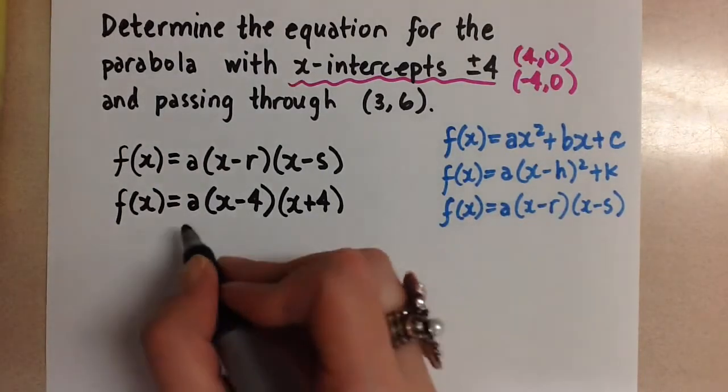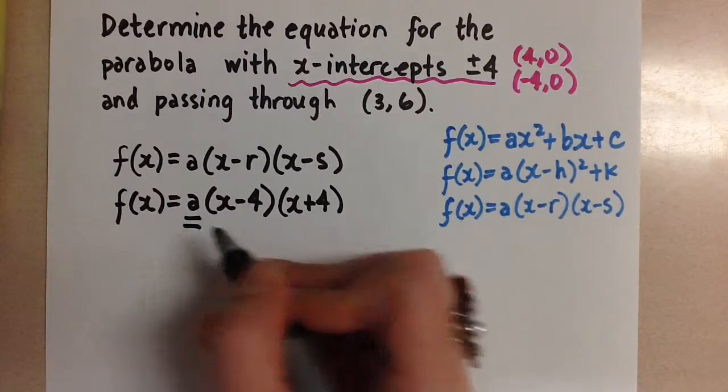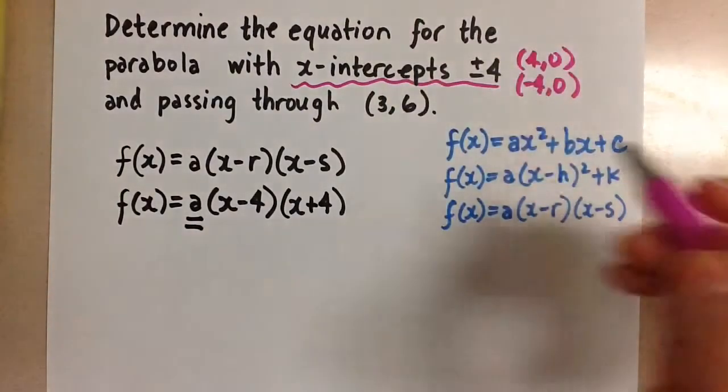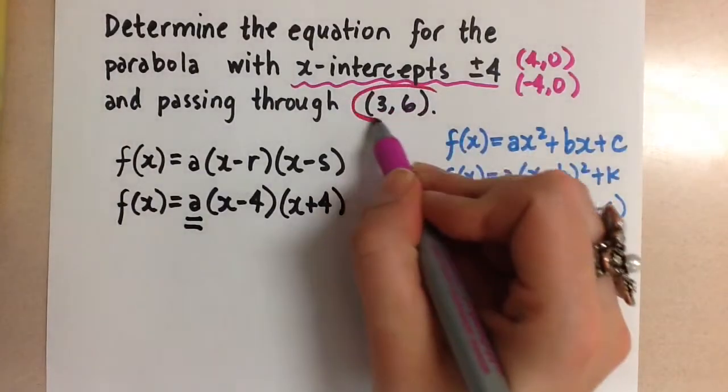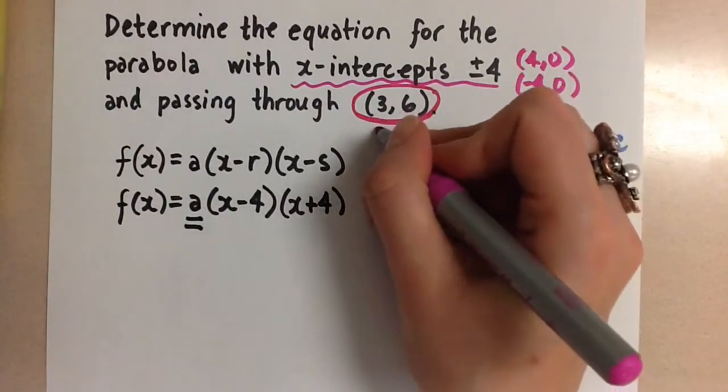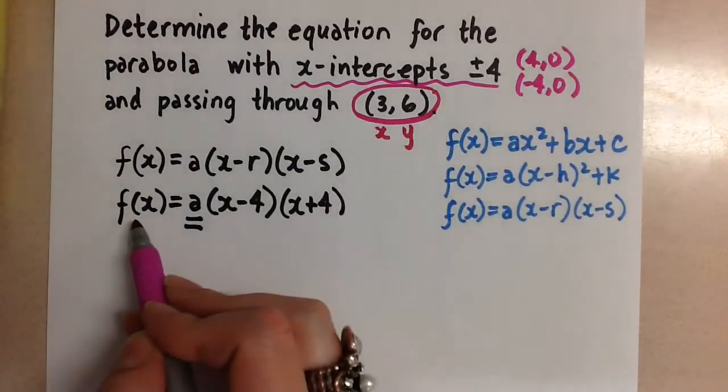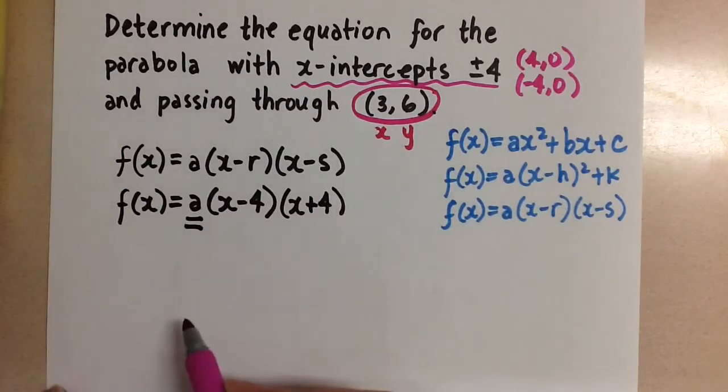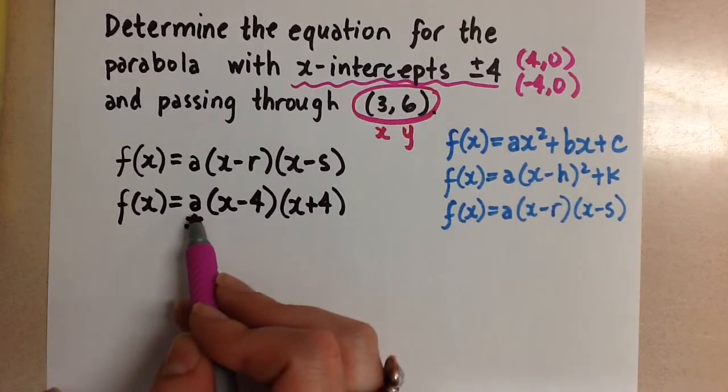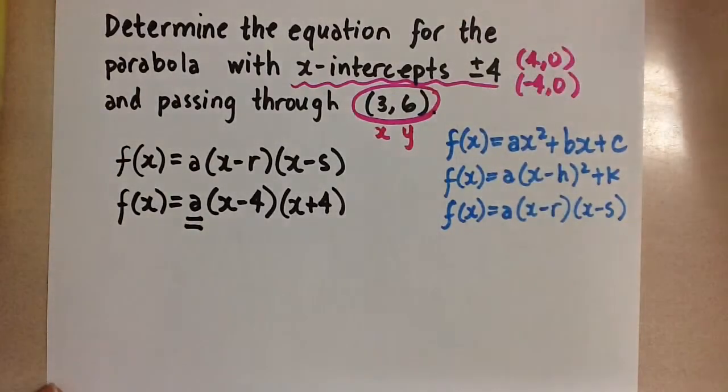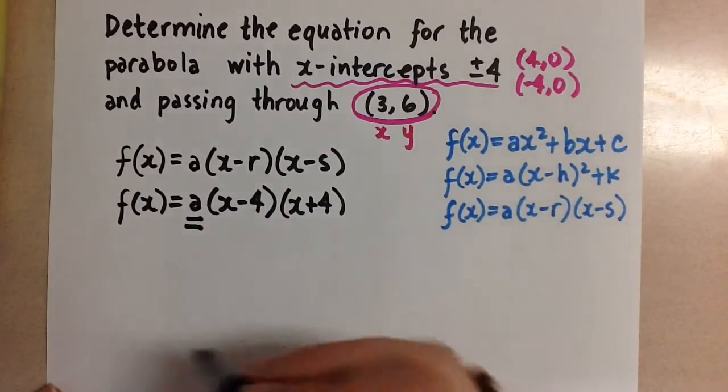Now, we need to find this a value still. Well, the only way to find that a value is to use the extra point we're given here and sub in the x-coordinate and the y-coordinate for the x and the f at x. And then that's going to leave us with one equation with one unknown value of a. And when we have that, we know that we can isolate a and find the value of a.